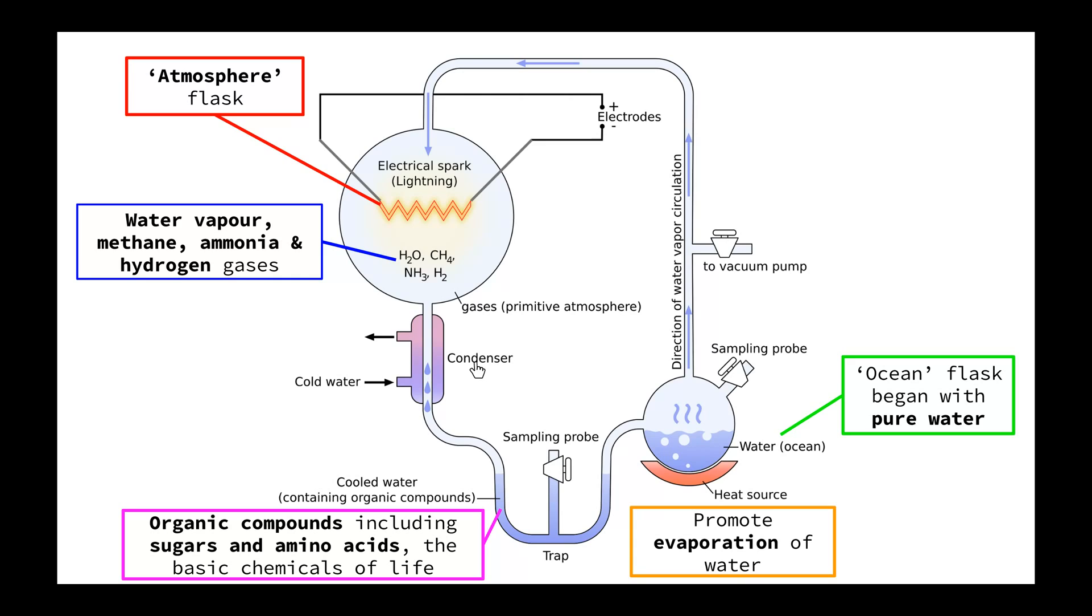At the bottom of the apparatus, you can see that there was a trap. It was just a shallow area of the apparatus where organic compounds, including sugars and amino acids, which we know are the basic chemicals of life, were found.